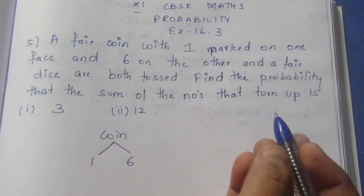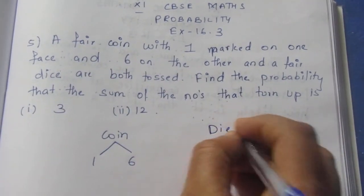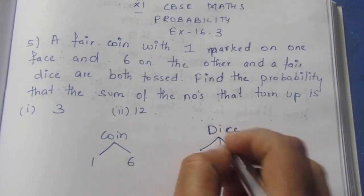A fair die is rolled. That is 1, 2, 3, 4, 5, 6.